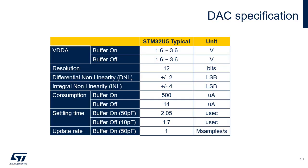The STM32U5 DAC can operate between 1.6 and 3.6 volts, whatever the buffer state, on or off. 12-bit monotonicity is guaranteed. By using sample-and-hold mode, the current consumption can be drastically reduced. The STM32U5 DAC buffered output has a settling time of 2.5 microseconds, whatever the capacitive load up to 50 picofarad. The DAC can handle a sampling rate of 1 megasample per second.